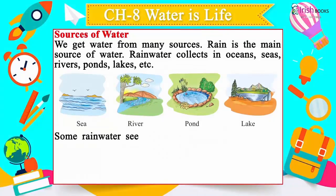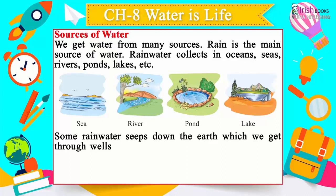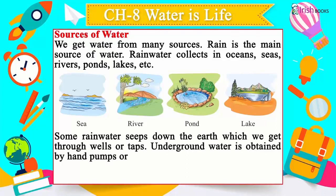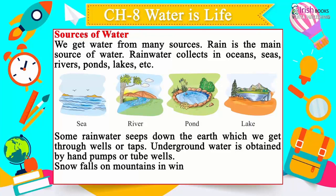Some rain water seeps down the earth, which we get through wells or taps. Underground water is obtained by hand pumps or tube wells.